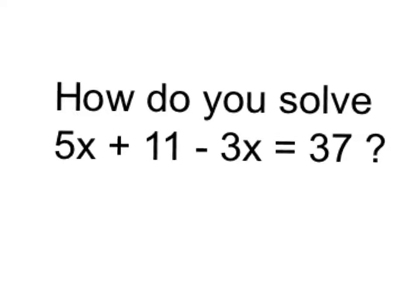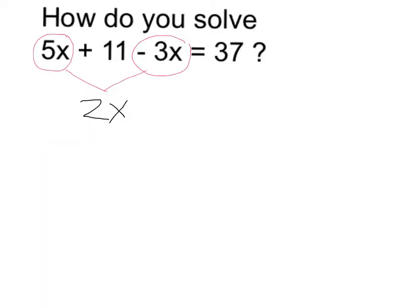To solve an equation like this, we're going to combine our like terms, making sure to take the negative with 3x, and then solve it as a two-step equation. This is going to become 2x plus 11 equals 37.